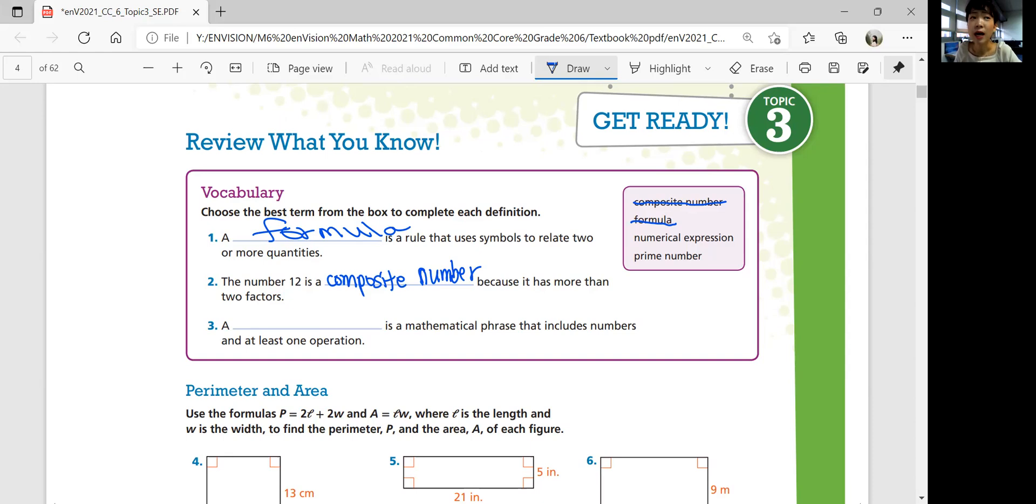A blank is a mathematical phrase that includes numbers and at least one operation. Is it numerical expression or a prime number? A prime number is the opposite of a composite number, actually. It does not have more than two factors. So a numerical expression is a mathematical phrase that includes numbers and at least one operation.